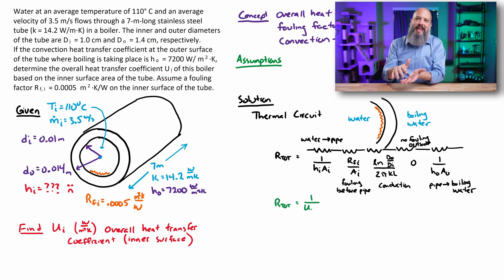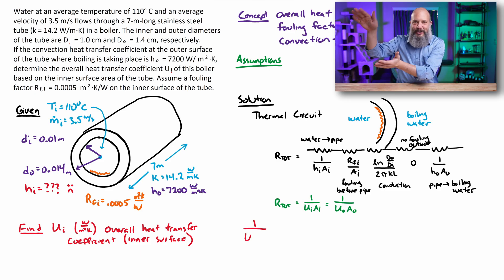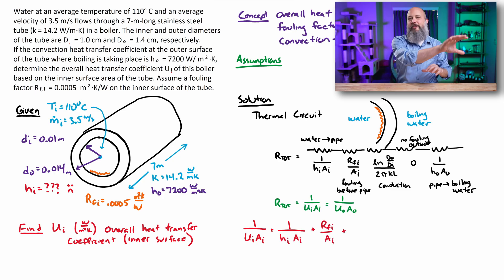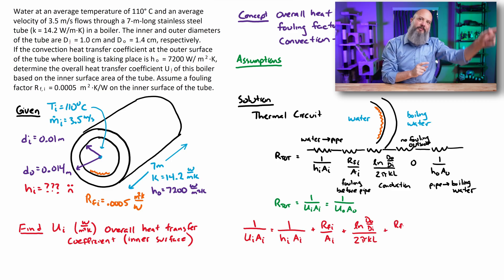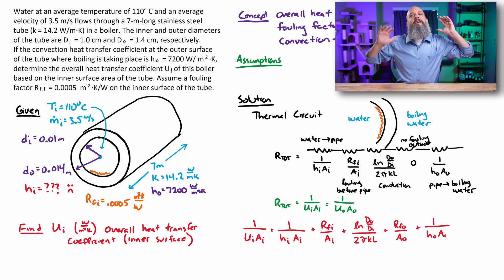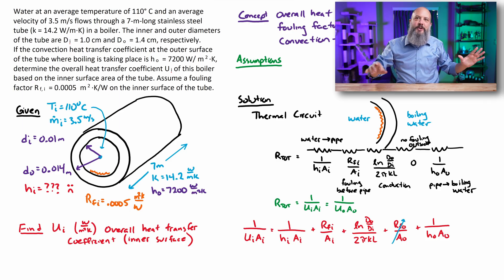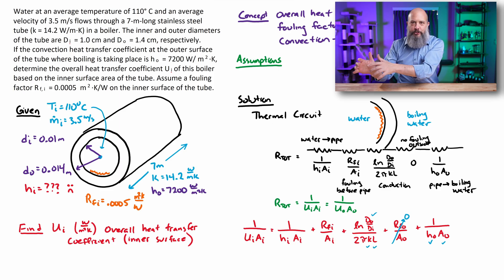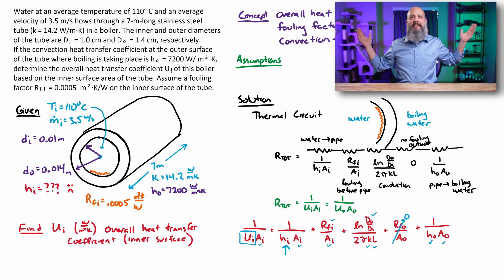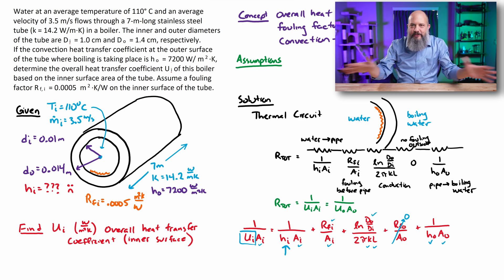When we add up all of these thermal resistances, that's R total. R total is 1 over U·A. We could either do U·A for the inside or U·A for the outside. Since we're interested in U·A on the inside, we want U inside. We'll do 1 over U·A inside is equal to 1 over H·A plus R over A plus natural log, 0 for fouling on the outside, 1 over H·A. Check marks next to all the terms we know. Question marks or arrows next to the terms that we don't know. We're ultimately looking for U. Can it possibly be that there's only one thing we don't know? All we have to find is H_i.